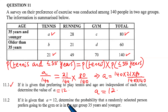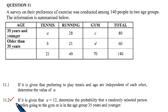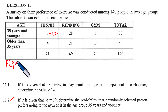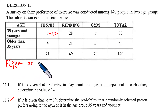We continue and solve question 11.2. Given that A equals 12, we determine the probability that a randomly selected person prefers going to the gym OR is in the age group 35 years and younger. We write this as: probability of gym OR less than or equal to 35 years.